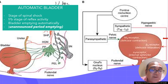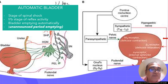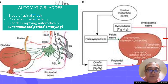Finally, if there is a lesion in the spinal cord, there will first be a stage of spinal shock, after which reflex activity of the bladder returns and the bladder empties automatically — periodic, unannounced emptying of the bladder occurs.